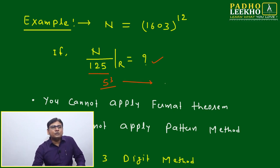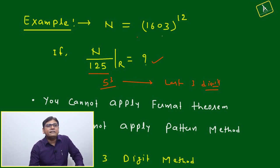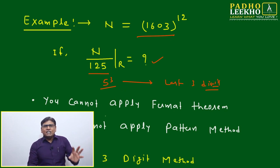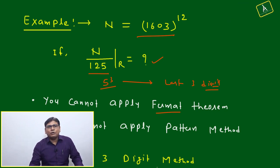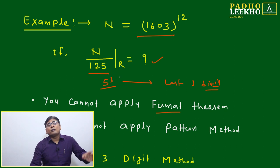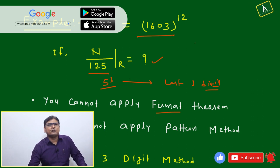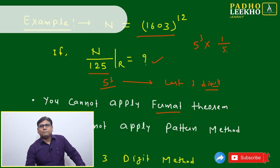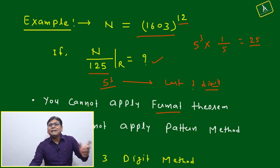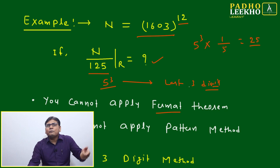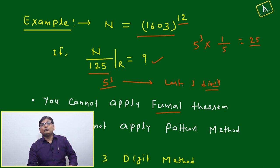The issue is how to find the last three digits when N = 1603^12. You cannot apply Fermat's theorem here because Fermat's theorem requires the power to be close to the Euler number of 125. The Euler number of 125 is 5^3 × (1 − 1/5) = 100, but here the power is only 12 — a big gap. Fermat's theorem would apply only if the power were a multiple of 100.